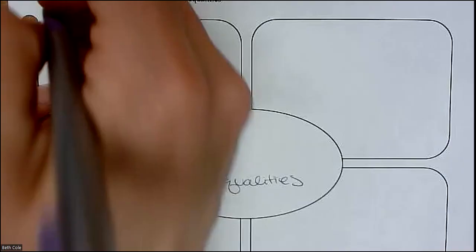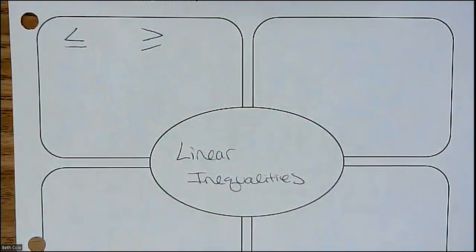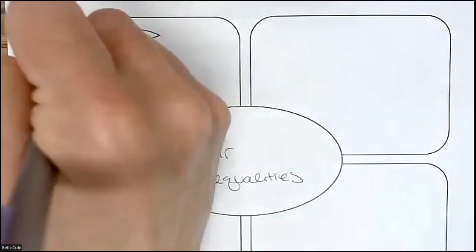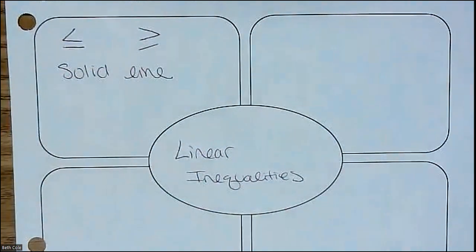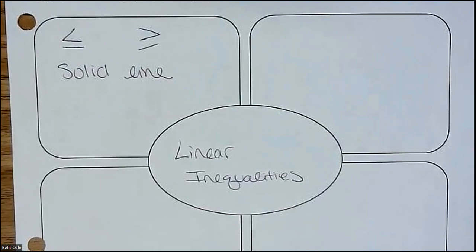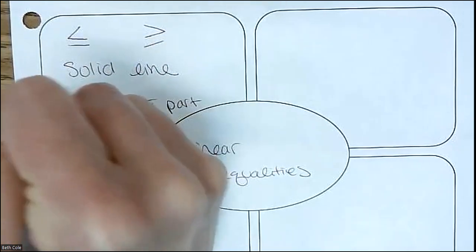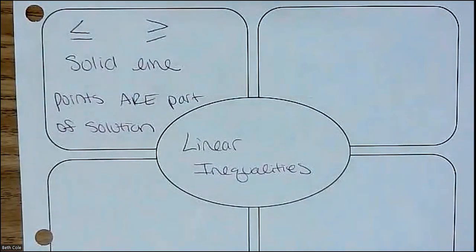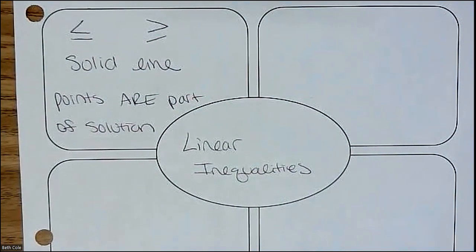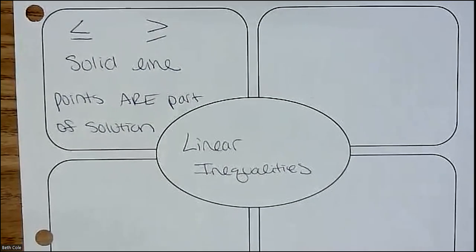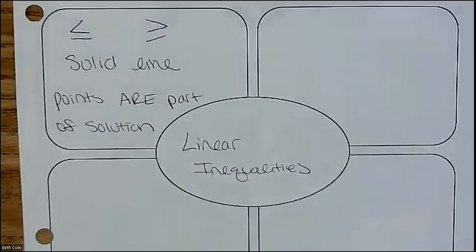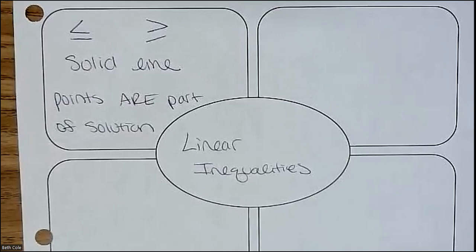Okay, so let's look at what those symbols are going to mean. If you have a symbol with the equal to on it, when you graph it you're going to use a solid line, basically a line. And the points on the line are part of the solution. So those ones count because it's a greater than or equal to, or less than or equal to. If you see the equal to, you're going to use a solid line. You want to write that down for me?